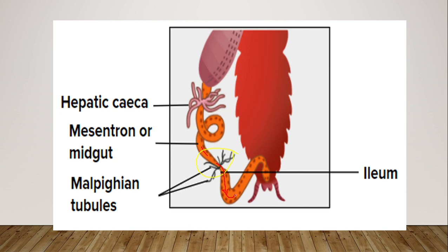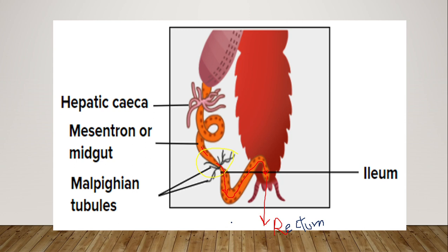The waste materials flow from the hindgut into the swollen portion called the rectum. The rectum then reabsorbs water — if there is any extra water present in the material flowing through the hindgut, the rectum reabsorbs all of it. The remaining material is then in the form of feces, or solid excreta, because a high amount of water is reabsorbed by the rectum and put back into the hemolymph for further use. So the waste material excreted from the anus is in the form of solid excreta.